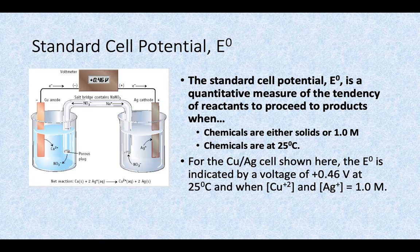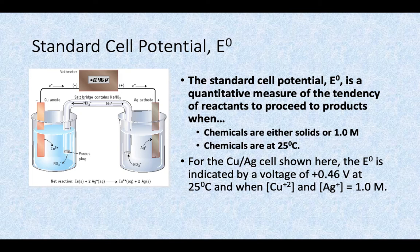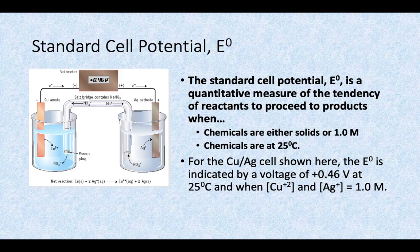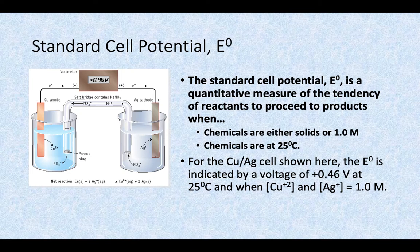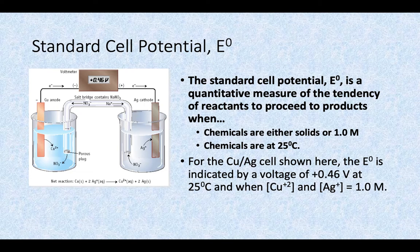Over these next few slides, we're going to look at how you can calculate the standard cell potential, or E°. The standard cell potential is a quantitative measure of the tendency of reactants to proceed to products. Kind of like how you could look at the delta G value - if it's negative, it will tend towards the products. If you look at the K value, if that's greater than 1, it leads towards the products. Here's yet another way to determine if a reaction is thermodynamically favorable towards that product side.